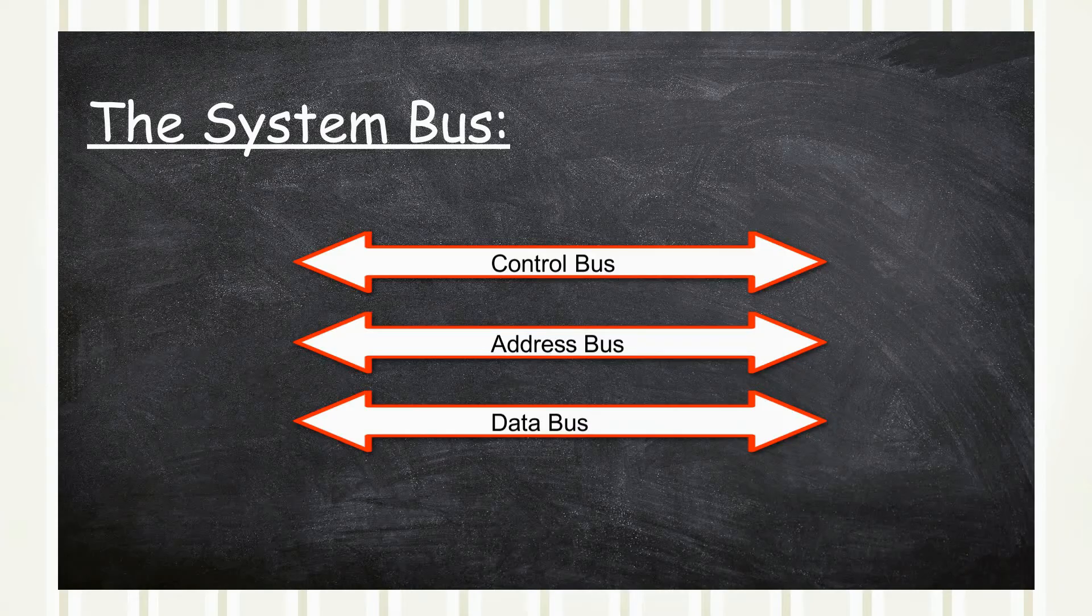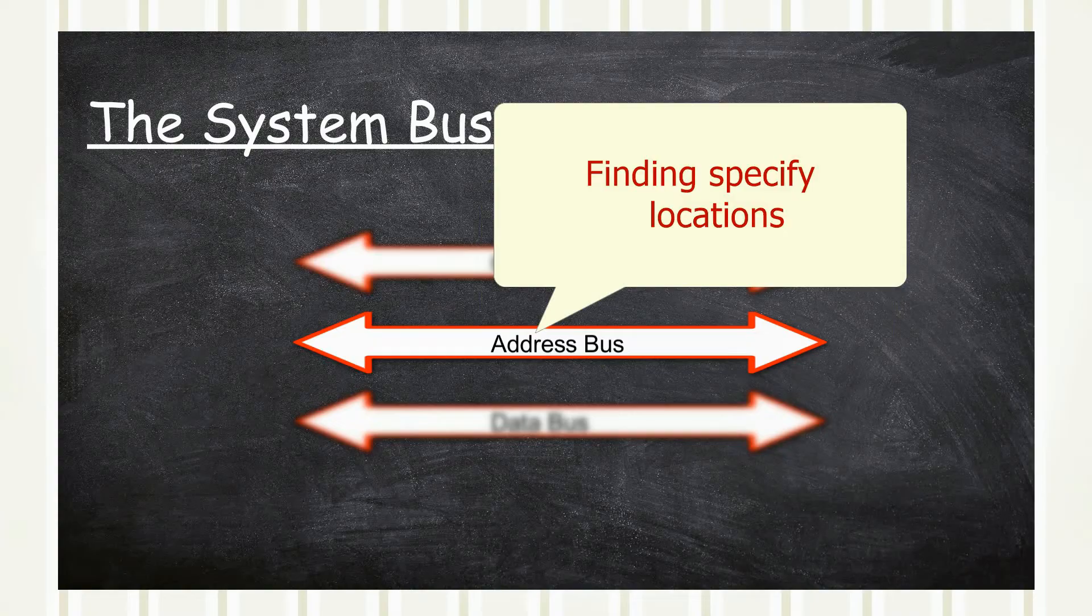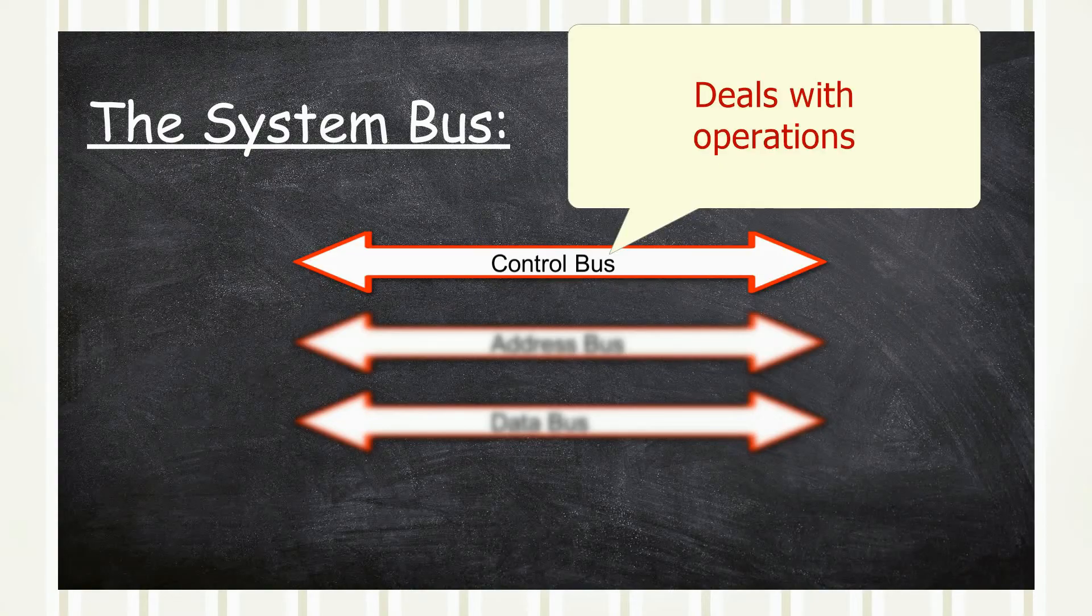To reduce cost and space, the system bus had three functions. A data bus which transmitted data, an address bus used for finding specified locations like within memory, and a control bus which dealt with operations, for example reading and writing.